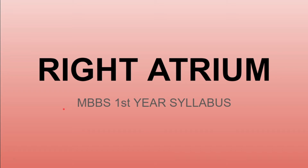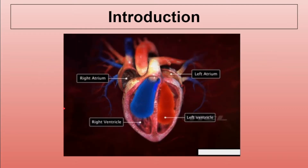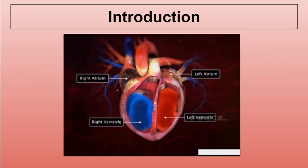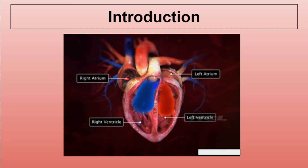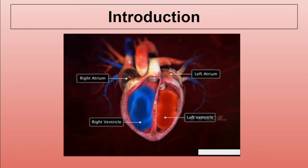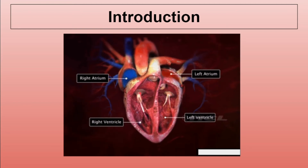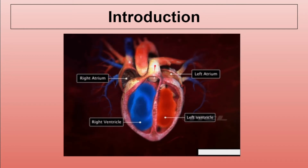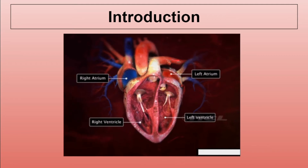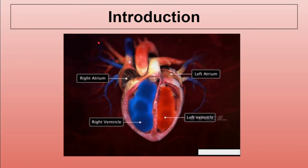Hello everyone. Today we will discuss one more important topic of thorax — the right atrium. The venous blood from the right atrium goes into the right ventricle by passing through the tricuspid valve, then into the pulmonary artery or pulmonary trunk, and reaches the lungs where it gets oxygenated.